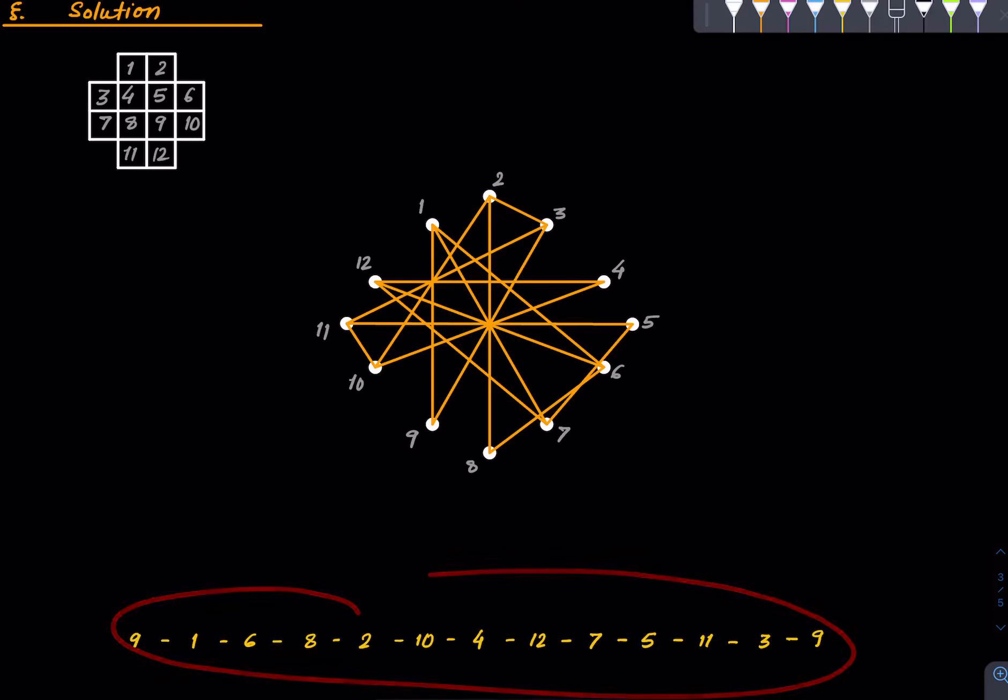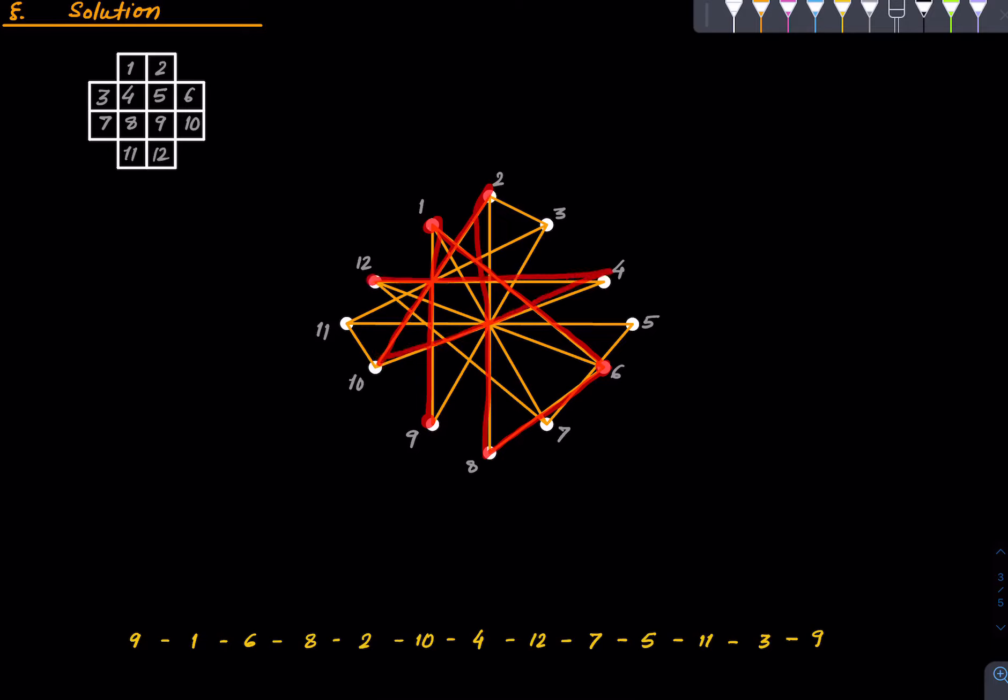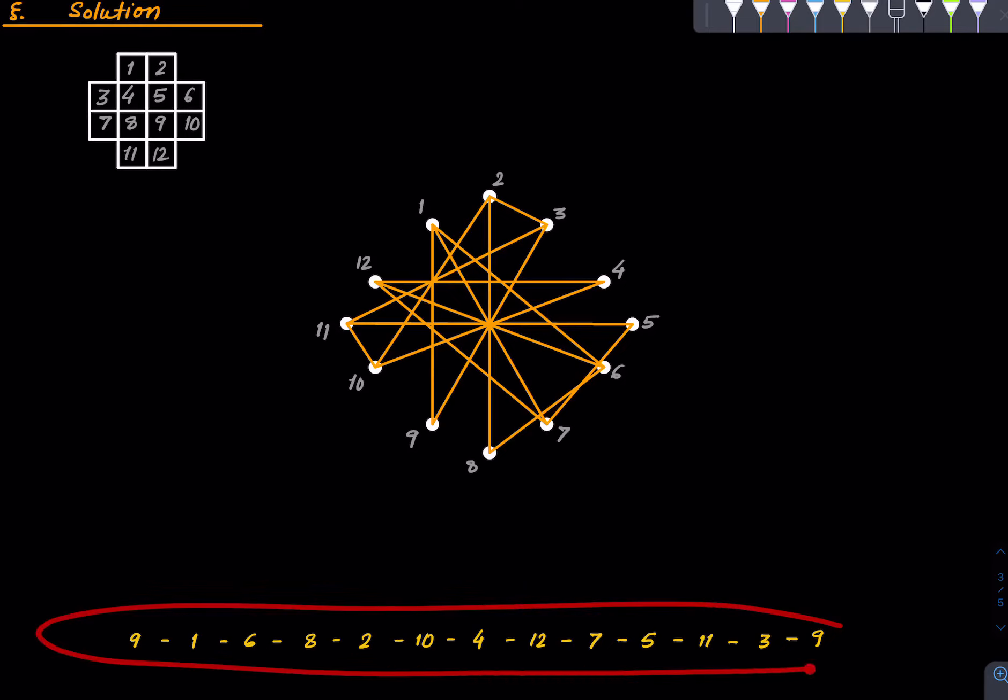So let's see if you start with nine. If you start with nine, then you can go to one, you can go to six, eight, two, then ten, four, twelve, seven, five, eleven, then three and nine. So we started at nine, we ended at nine, and we visited every other thing exactly once. And this is a very convenient way to find such a path. So this is a solution to our problem. This particular path is a solution to that knight problem.